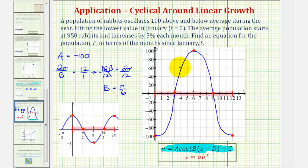Which means the equation for the oscillation part of our growth model would be f of t equals negative 100 times cosine of pi divided by six times the input variable of t, where t is the number of months. Now let's take f of t back to the previous slide and find the exponential growth part of our equation.